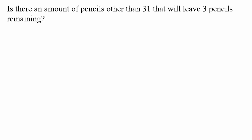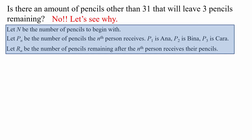Let's apply a bit more algebra at a higher level — let's generalize. We know 31 is an answer, but are there other values for N greater than 31 that still leave three pencils remaining if we follow the rules? The answer is no, and I will show you why. Instead of using the letters A, B, and C to represent the amount each person receives, we will use the symbol P subscript n, which represents the number of pencils the nth person receives. That means P1 is the amount Anna receives, P2 is the amount Bina receives, and P3 is the amount Kara receives.